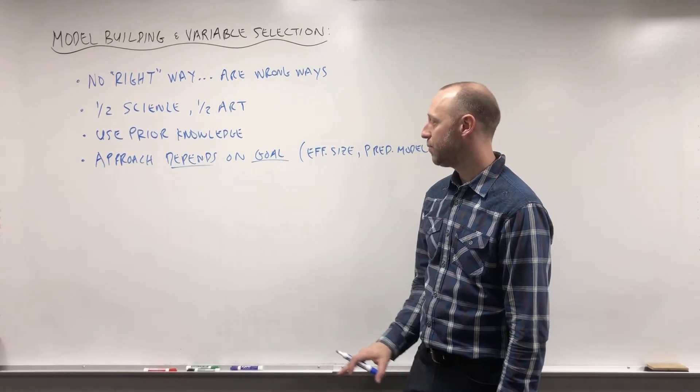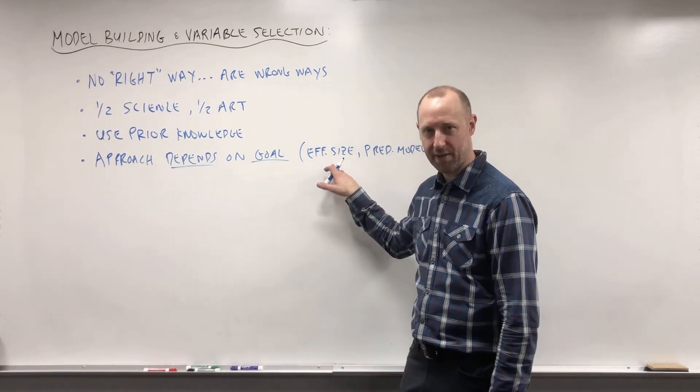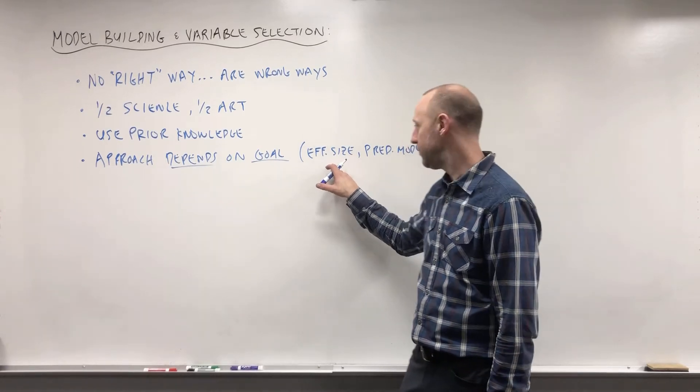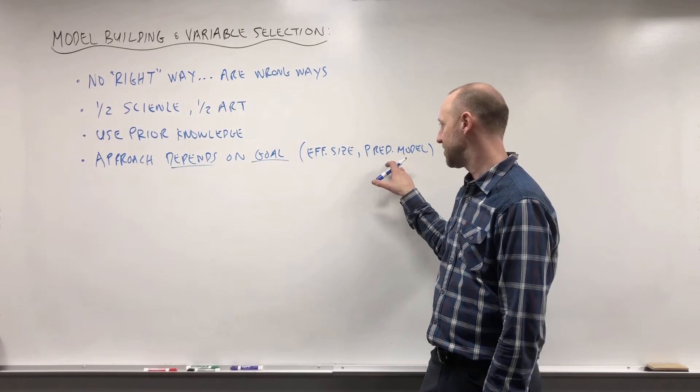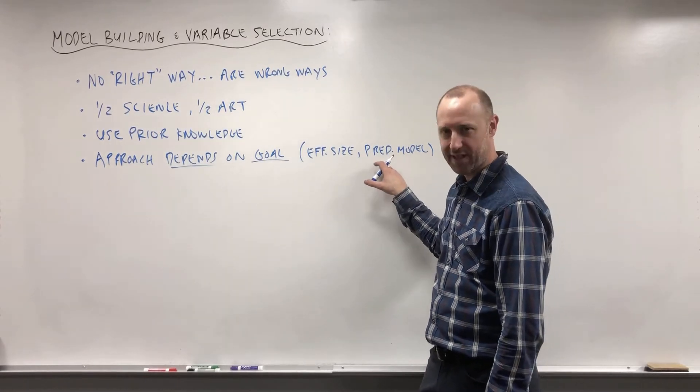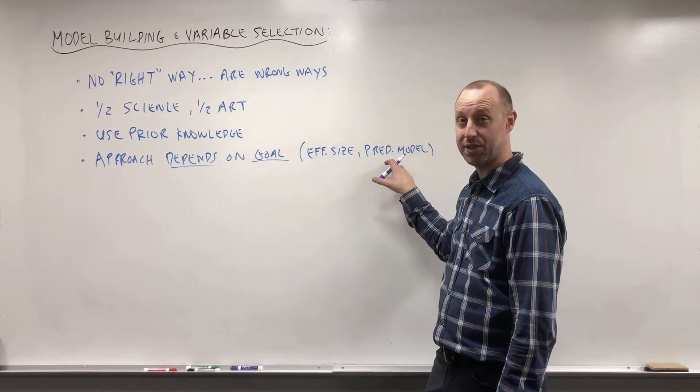We're going to go through and first look at some approaches or guides to building a model and selecting variables when you want to estimate the effect of x1 on some outcome. Then we're also going to look briefly at a guide or some suggestions on approaches when the goal is to predict the outcome.